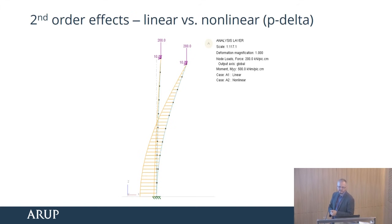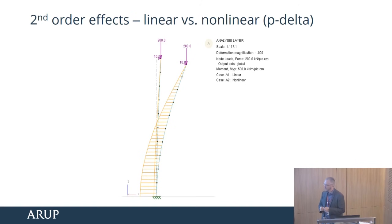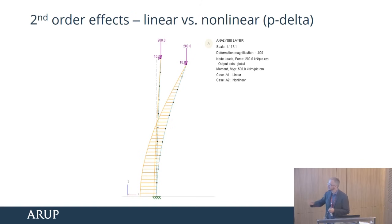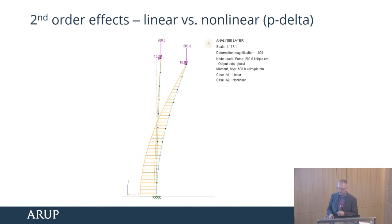P-delta effects: here we have one column with vertical loads and horizontal loads, subjected to both linear and non-linear analysis. Same structure, same loads — very different results. The right-hand non-linear analysis has the P-delta effects, and the bending moments at the bottom are four or five times larger than in the linear analysis.